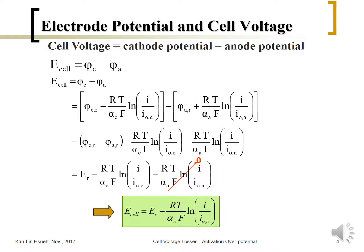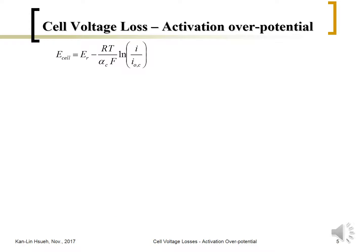That's why researchers focus on the oxygen reduction reaction rather than the hydrogen oxidation reaction — because the oxygen reduction reaction is the major cause of activation overpotential loss, rather than the hydrogen side. So the cell voltage can be expressed as the Tafel equation.